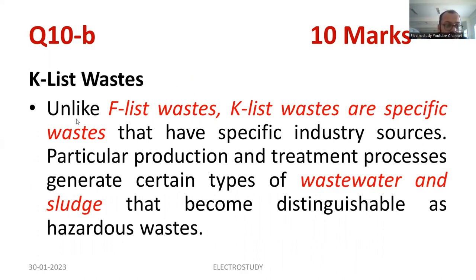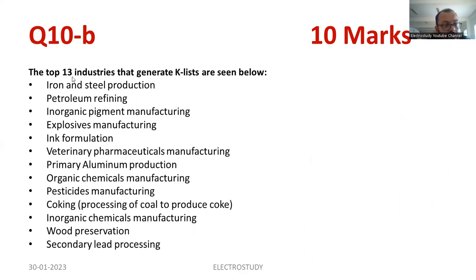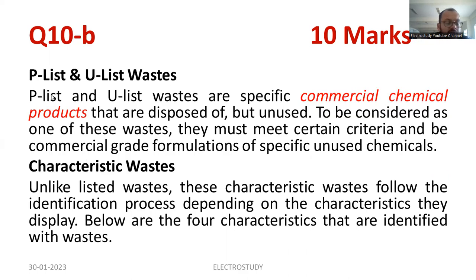P list and U list are also very important. These are basically specific types derived from commercial and non-commercial products. Another type of waste is known as characteristic waste. Based on the identification process and depending on the characteristics they display, there are four types of characteristic waste: ignitability — flammable type material; corrosivity — easily getting corroded — and the pH value is mentioned: it may be equal to or less than 2 pH, or equal to or greater than 12.5 pH. A pH of 2 means highly acidic and 12.5 means highly basic. pH means 'potenz of hydrogen' — it measures acidity or alkalinity on a pH scale of 0 to 14, where 7 is neutral.